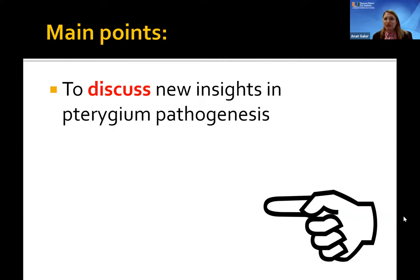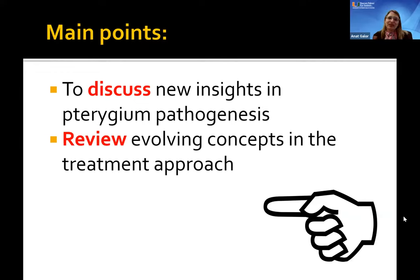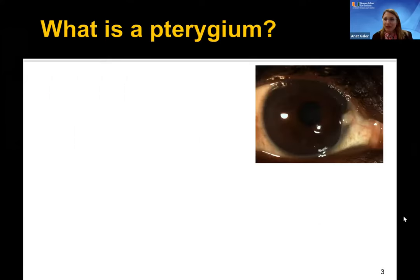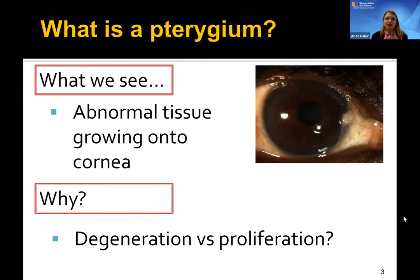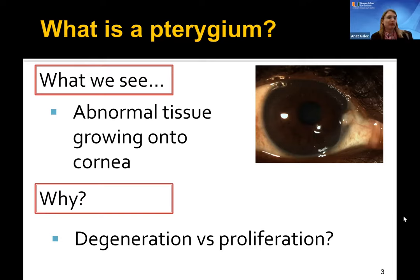I think pterygium is really exciting — it's more than just a growth on the eye. The question that always comes up is what to do with it, and there are more complexities than you'd think. Take a mental vote: when we see a pterygium, is it an abnormal tissue growing into the cornea because of limbal stem cell deficiency — degenerative — or is it an active, more cancer-like proliferative process?